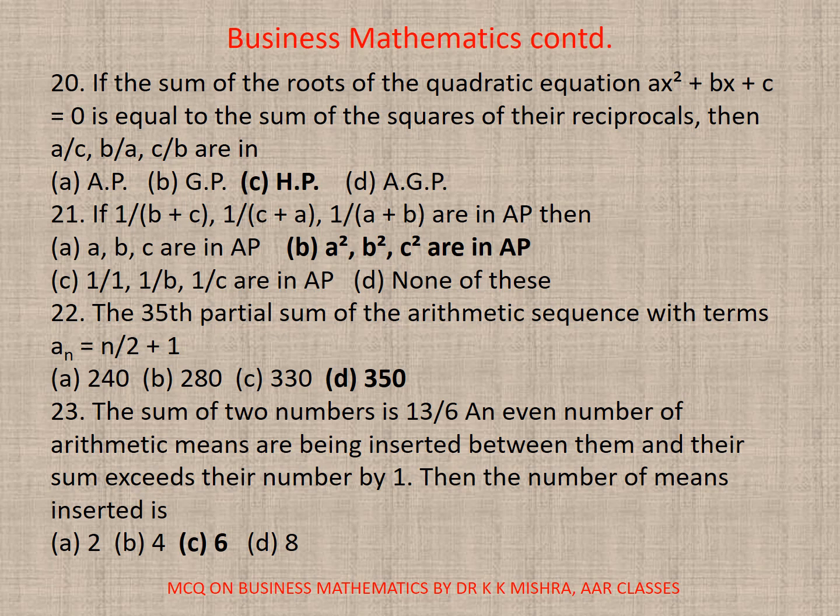Question 21. If 1/(B+C) or 1/(C+A), 1/(A+B) are in AP, then here correct option is B, A², B², C² are in AP. This is again a repeated question that you can refer to.